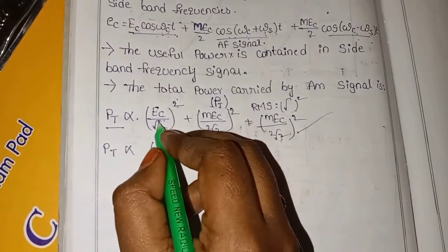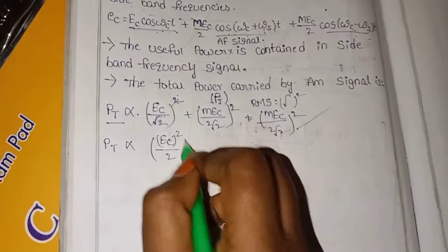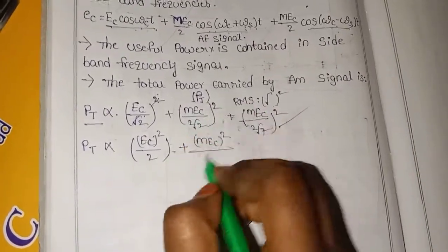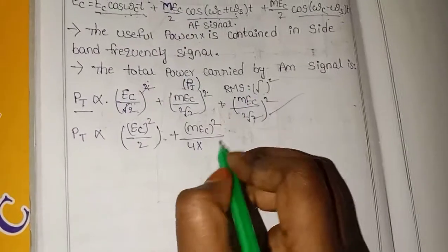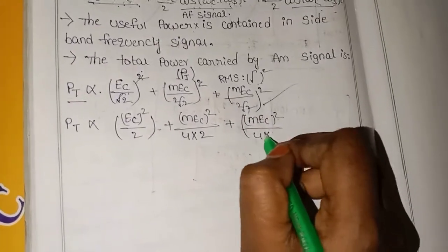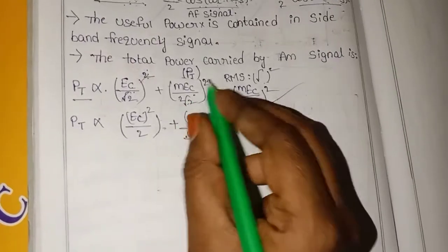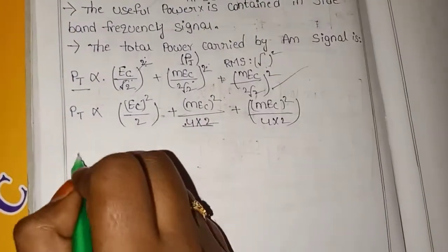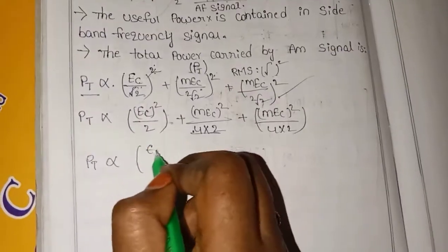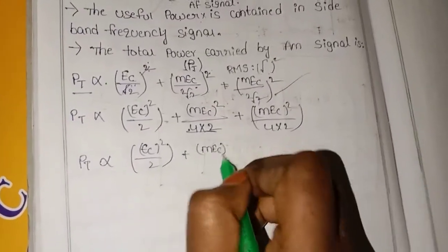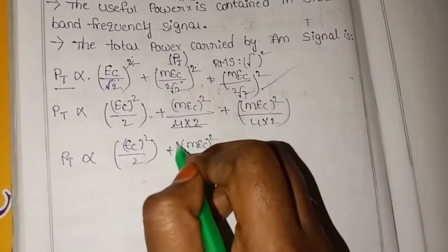Simplifying: the root cancels. MEC whole square divided by 2 squared gives 4. So we get MEC whole square by 4 into 2, which simplifies. PT is proportional to EC whole square by 2, plus MEC whole square by 8, plus 2·MEC whole square by 8.